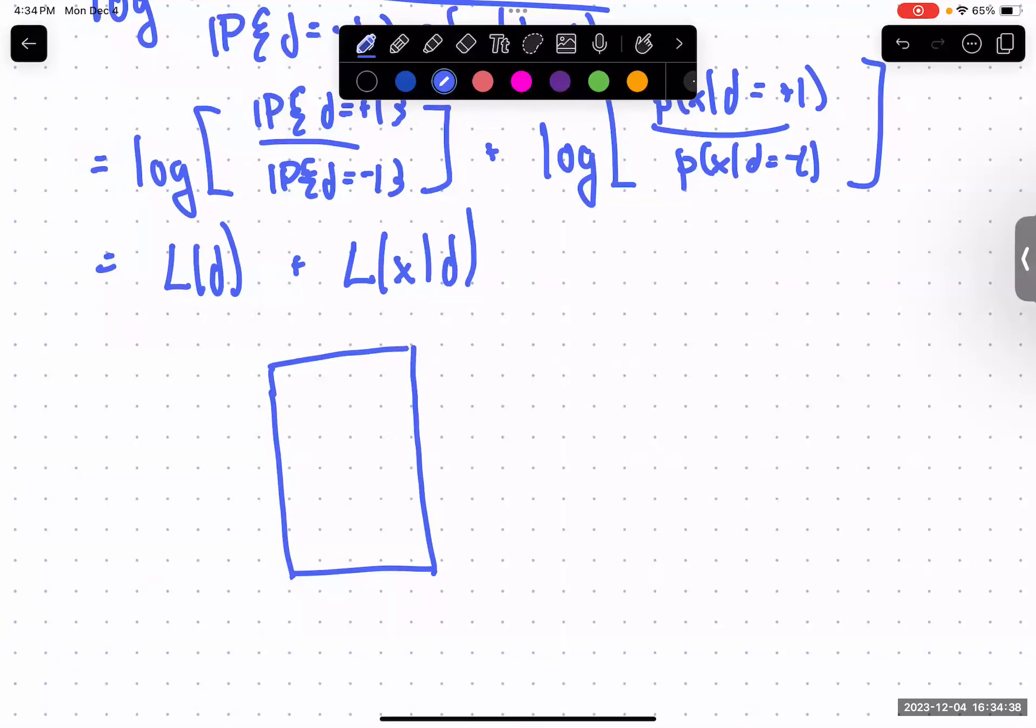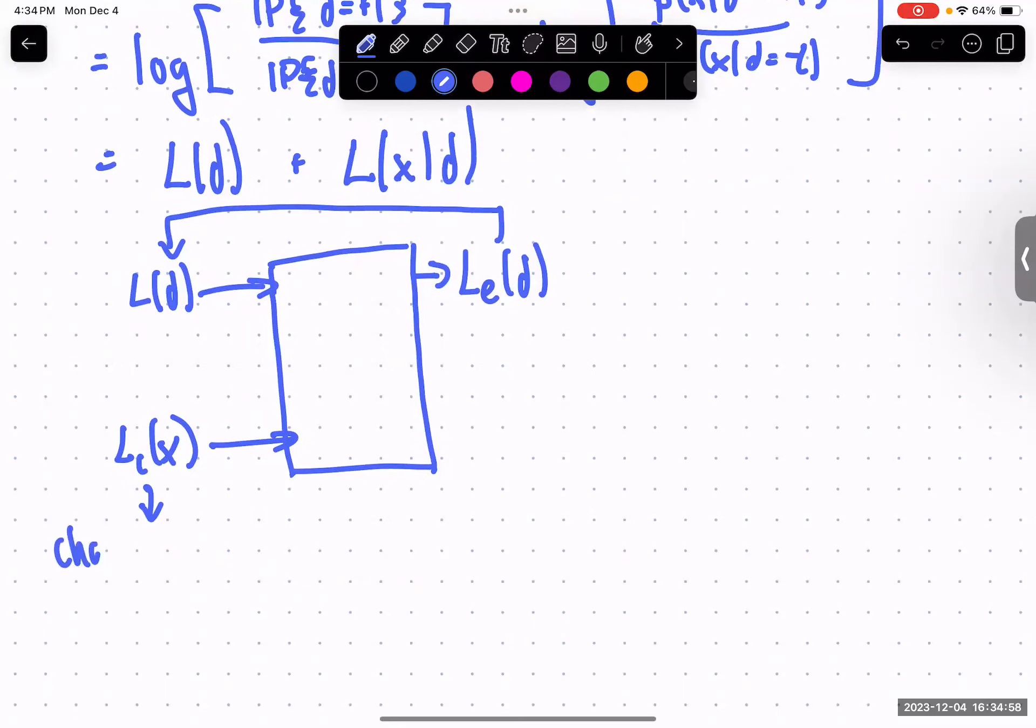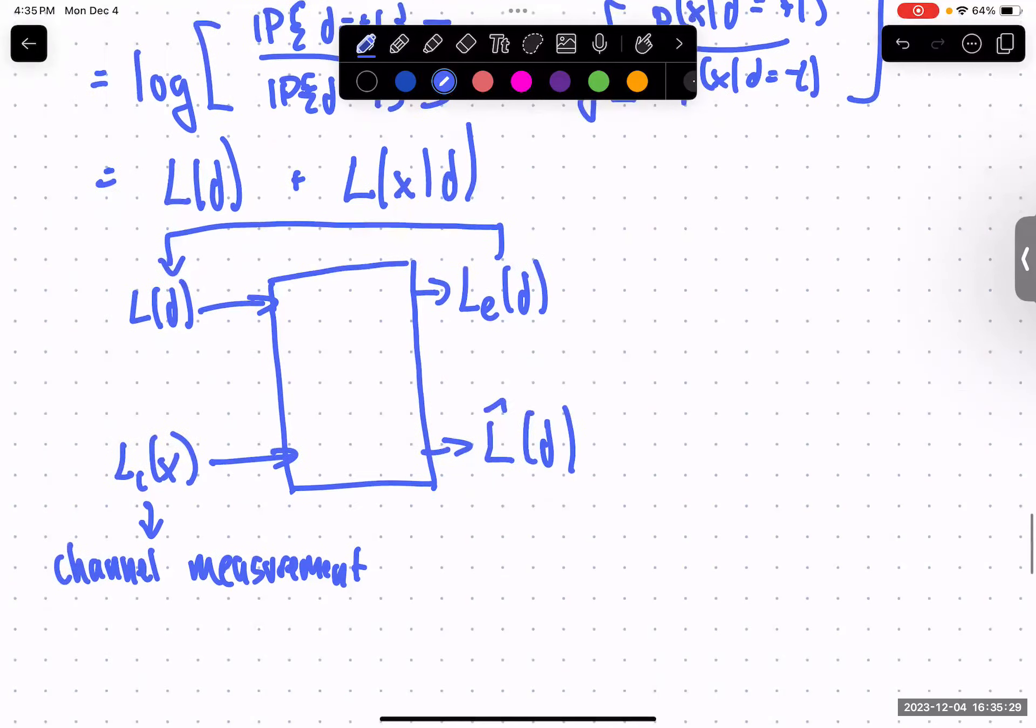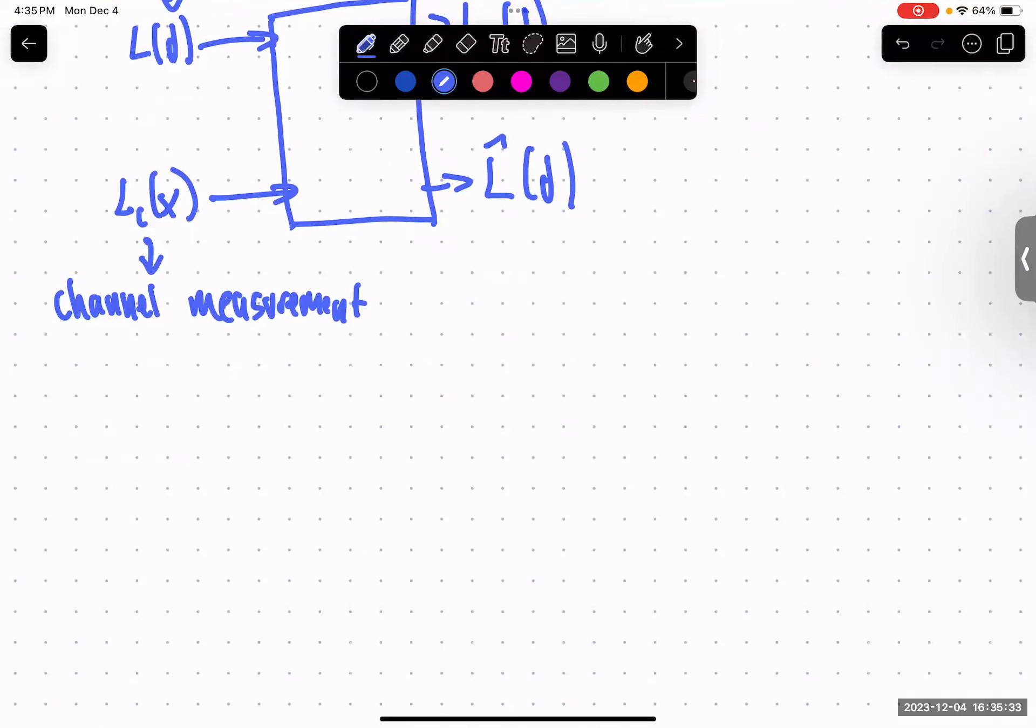So now we have this term and we're going to do standard trick with it, which is to take the log. And the log of this is the log of the ratio of these probabilities plus the log of the ratio of these two PDFs. And I'll write this as like the likelihood of d plus the likelihood of x given d.